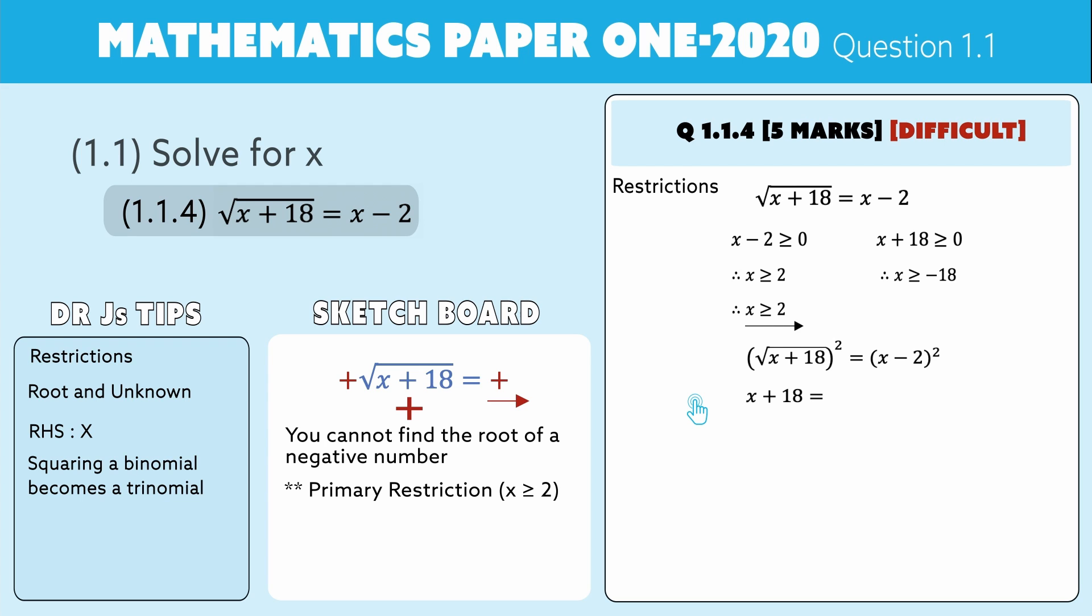That means it's the first term squared, there's a middle term of 2 times x times minus 2, so that gives me minus 4x plus 4. Then I'm back at a quadratic, so everything you learned about the quadratic kicks in. I need it in standard form, so I'm going to keep x squared minus 4x plus 4 on one side. I'm going to take the x over, it becomes minus x, and take the 18 over, it becomes minus 18 equals naught. Clean it up so we get x squared minus 5x minus 14 is equal to naught.